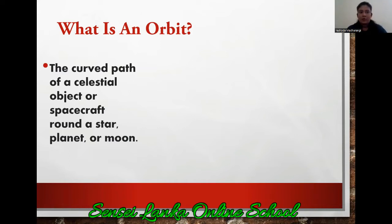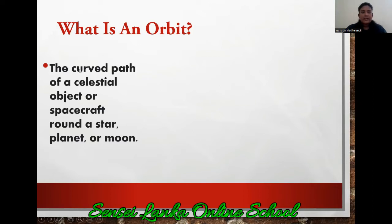Now look at this. What is an orbit? To understand the rotation and revolution you have to know these things. So what is an orbit? Look at the definition I have given. Orbit is the curved path of a celestial object or spacecraft round a star, planet or moon.